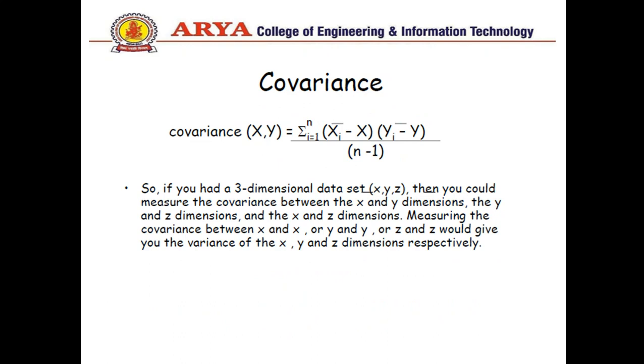Now covariance can be calculated by using the formula. Here we consider summation of i equals 1 to n: xi minus x mean, into yi minus y mean, upon n minus 1.